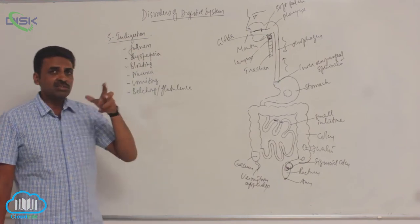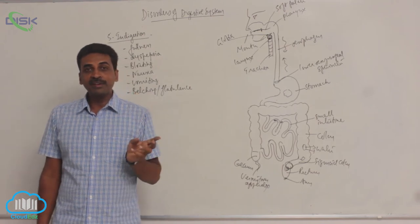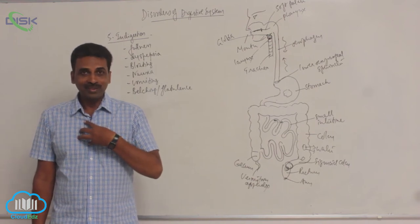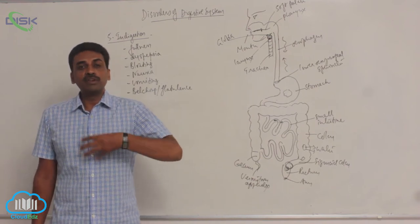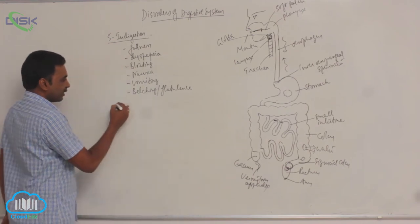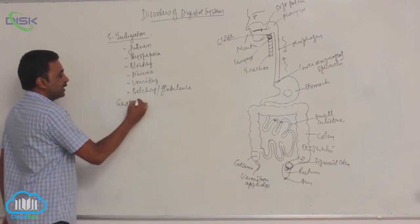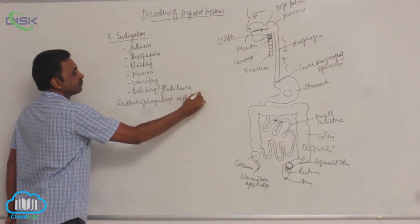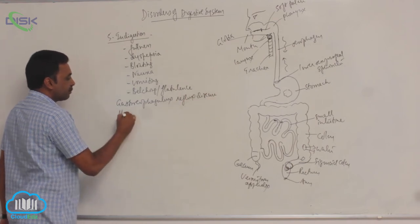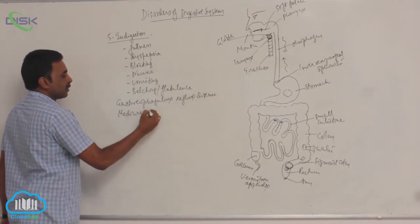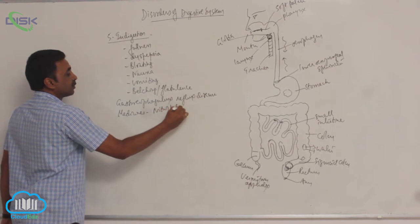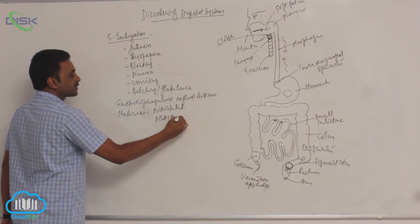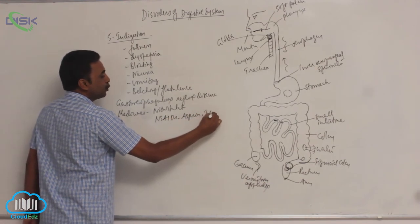Indigestion results in abdominal pain and also causes heartburn. Heartburn occurs because of gastroesophageal reflux disease or because of certain medicines like nitrostat or non-steroidal anti-inflammatory drugs like aspirin and ibuprofen.